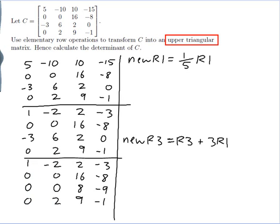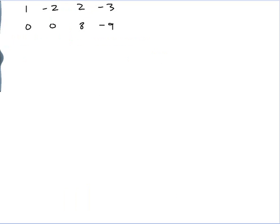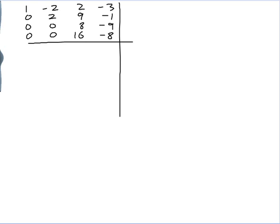Now let's go on to the next column. I want zeros here. I have a 2 here, and I could get that to be zero by swapping row two and row four. So my new row two and row four are equal to my old row four and row two respectively. Rows one and three are unchanged. Now I have zeros in the required positions in this column.